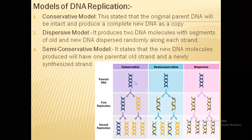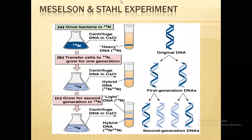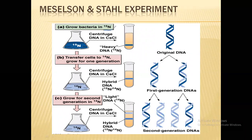We consider the semi-conservative model of DNA replication to be the most accepted theory. But how do we know that? It was proven by Meselson and Stahl. Matthew Meselson and Franklin Stahl conducted an experiment to prove that DNA replication is actually semi-conservative in nature. What they did — they took bacteria, which is E. coli, and they grew it in N15 medium, which is a heavy isotope of normal nitrogen. When the bacteria grow in N15 medium, they absorb the N15. So this DNA will become a heavy N15 isotope of DNA. Now remember there are two strands.